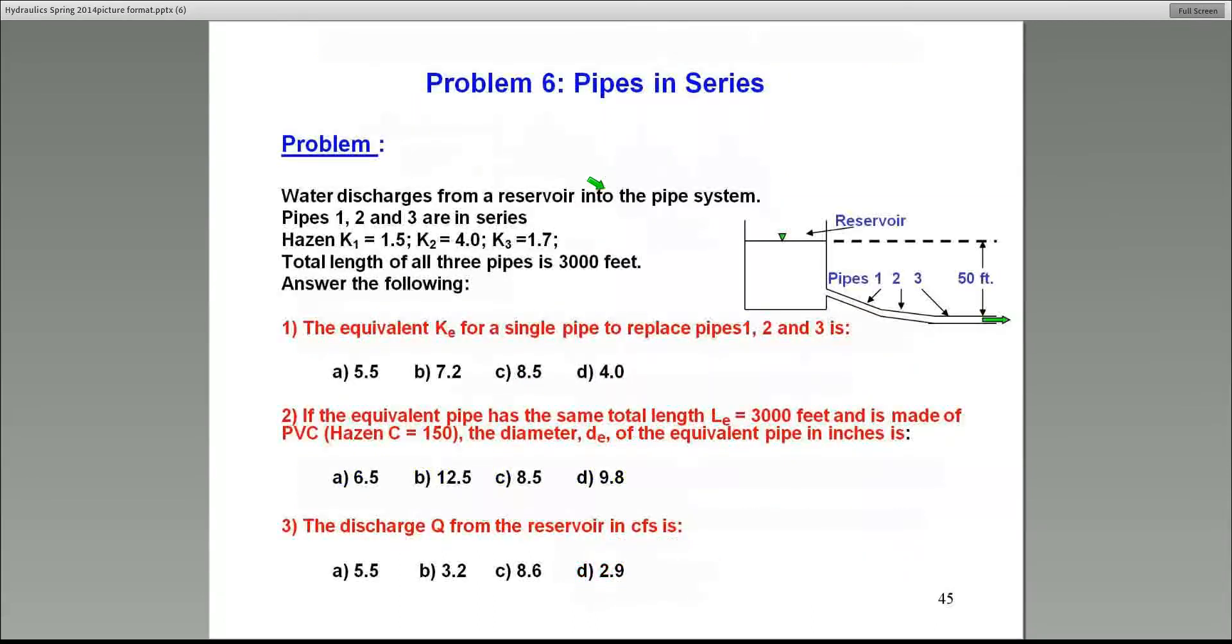I've set up a small problem for you. You can work on this. In this case, I do give you the K values in the problem, but these are all pipes in series, so that should make it fairly easy. The first question is to calculate KE for a single pipe to represent these three pipes in series, one, two, and three. Then I ask you for some additional information on the equivalent pipe itself, and finally, the discharge from the reservoir. You can go ahead and work on this as per my example. It's similar to what we just did.